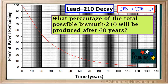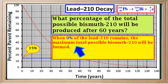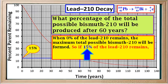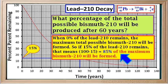Here's another question: what percentage of the total possible bismuth-210 will be produced after 60 years? We draw a vertical line at 60 years to the curve and a horizontal line to the percent axis. The line hits the axis at 15%. When 0% of the lead-210 remains, the maximum possible bismuth-210 will be formed. So if 15% of the lead-210 remains, that means 100 minus 15, which equals 85% of the maximum bismuth-210 will be formed.